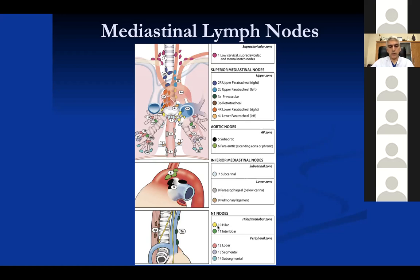If lymph nodes 10-14 are involved contralaterally, the patient should be staged as N3. Number 2 is upper paratracheal, 4 is lower paratracheal, 10 is hilar. On the left side of the slide, there is a patient with N0 disease — right lower lobe tumor with no lymph node metastasis. N1 means there is a tumor with positive hilar lymph nodes. N2 means there is a tumor with paratracheal number 4, or subcarinal lymph nodes positive. Subcarinal lymph nodes are N2 for either side.